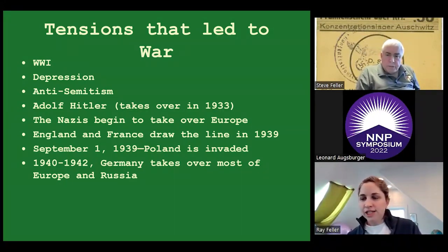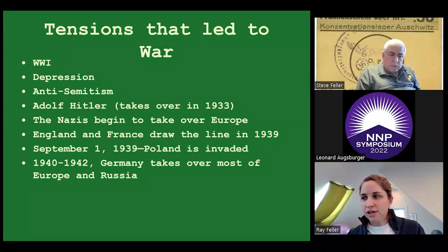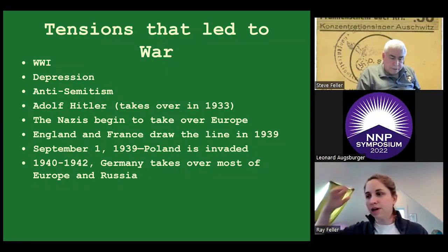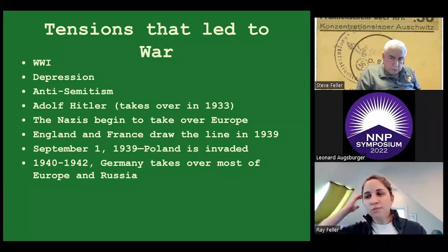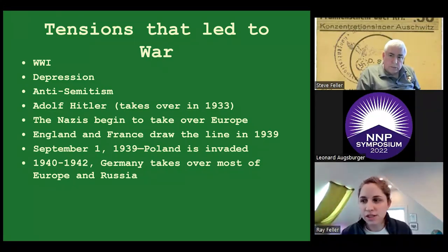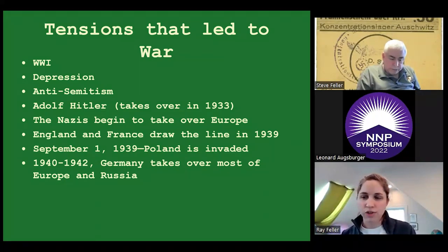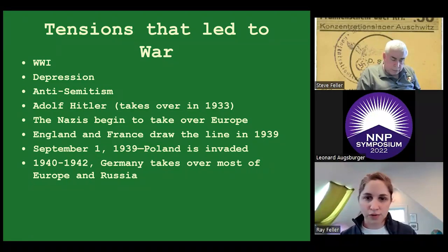In 1939, England and France said this is enough. In September, Germany, despite promises to the opposite, invaded Poland, and then over the course of the early 40s, Germany continued to take over most of Europe and Russia.